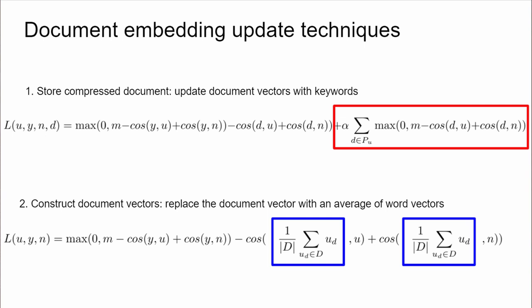The second technique constructs each document vector as an average of word vectors. While this sidesteps the explicit need to update the document vectors, it retains the important pooling property of this feature. That is, the document vector term becomes like a document-wide context for each word. And, of course, document vectors can be reconstructed post-hoc from the most up-to-date word vectors.